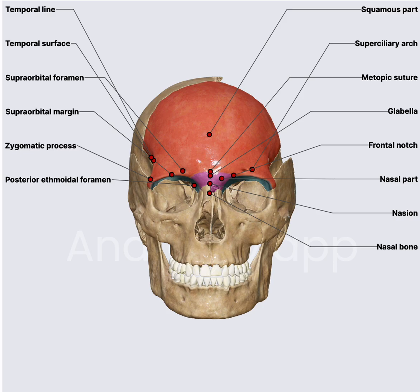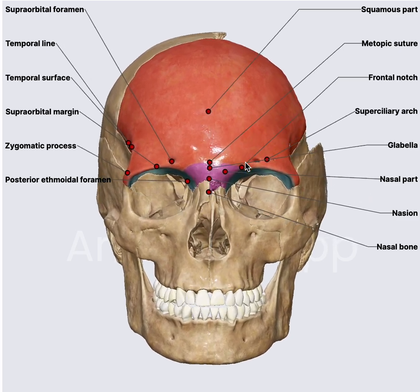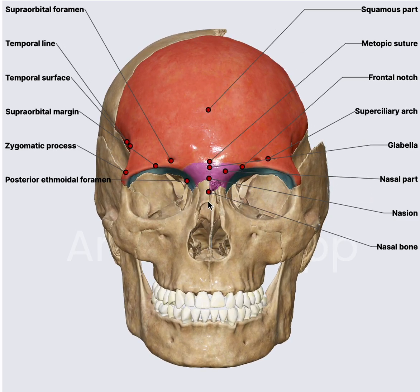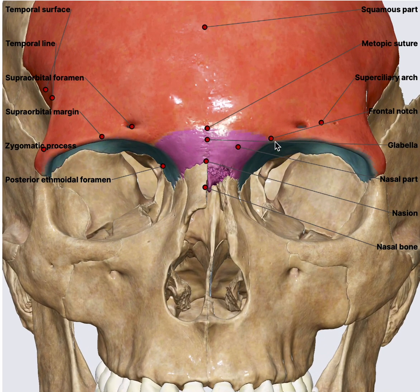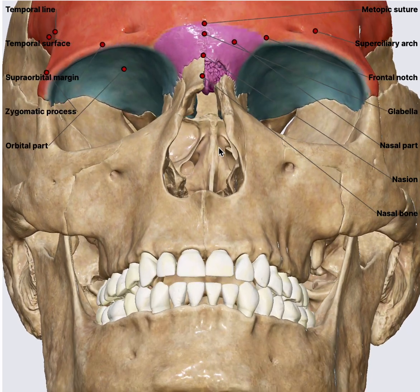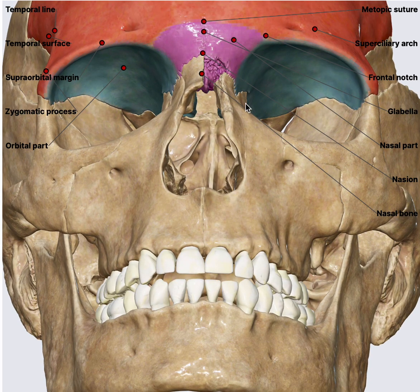In today's series of 3D anatomy we are going to look at a specific bone — the frontal bone. As you can see, this is quite a big bone and it covers almost the superior aspect of the sinus and also the orbit. In broader terms, the frontal bone is divided into three parts: the squamous part, the nasal part, and the orbital part, which forms the roof of the orbit.